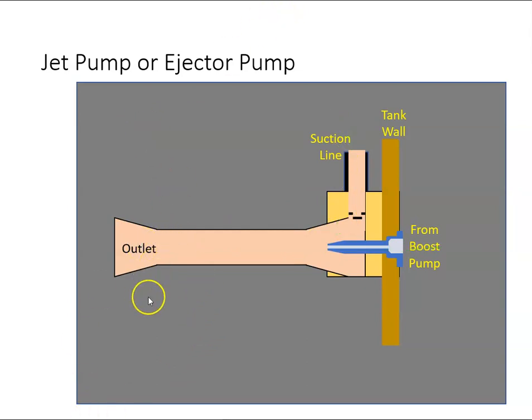Now to make sure that the fuel from the booster pump doesn't go back through the suction line, there is a check valve installed. This only lets fuel come in one direction.